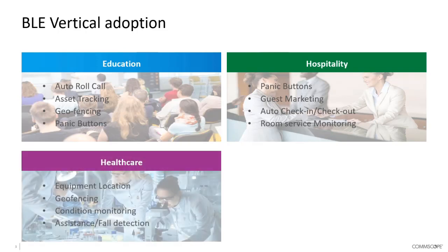In a healthcare arena, BLE supports equipment location — for example, finding the nearest ECG monitor or defibrillator. Geofencing ensures that equipment hasn't left a building or surgical environment. Condition monitoring enables tags on medicines to verify they have stayed within tolerance for temperature, humidity, and vibration, providing a chain of custody. In assisted living environments, fall or assistance detection can automatically trigger an alarm and send help when someone falls.